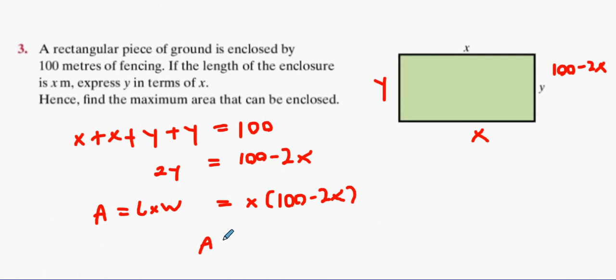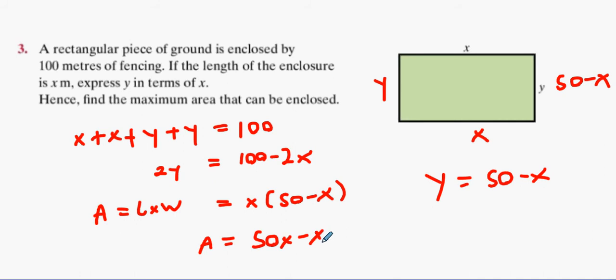Oh sorry, my bad. I had 2y not y, so y is divided by 2 and you have 50 minus x. So that's my fault. So that's 50 minus x, and this here is 50. Thanks for that. 50x minus x squared.